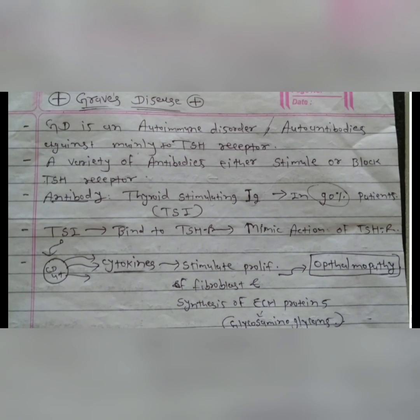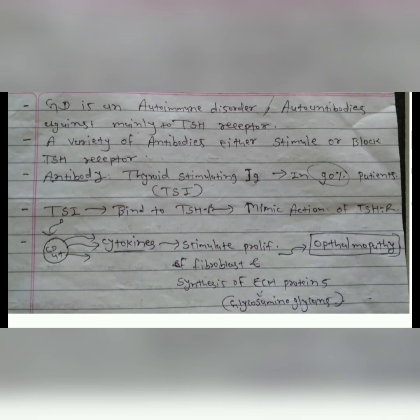The mechanism of action is that these antibodies bind to the TSH receptor present on the thyroid gland. That binding mimics the action of TSH, increasing production of T3 and T4. Another antibody, thyroid stimulating immunoglobulin (TSI), binds to CD4 positive T-cells, inducing production of cytokines that stimulate proliferation of fibroblasts and synthesis of extracellular matrix proteins, mainly glycosaminoglycans, which can lead to ophthalmopathy.